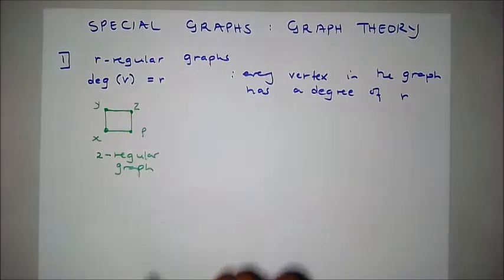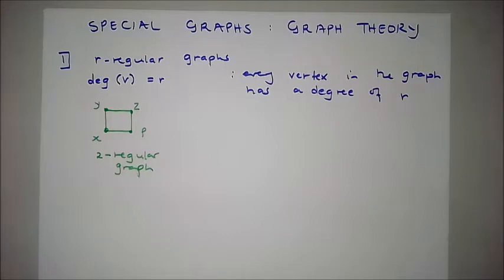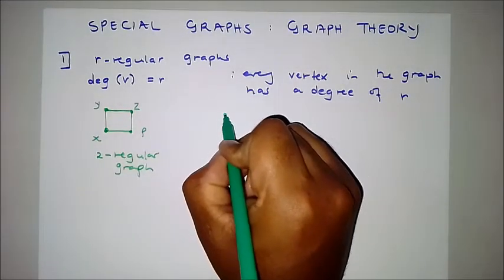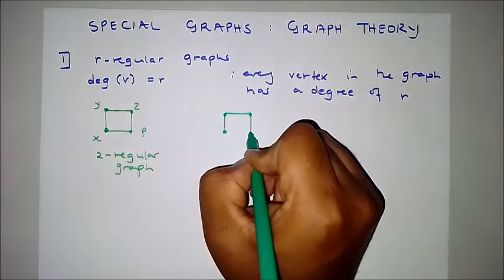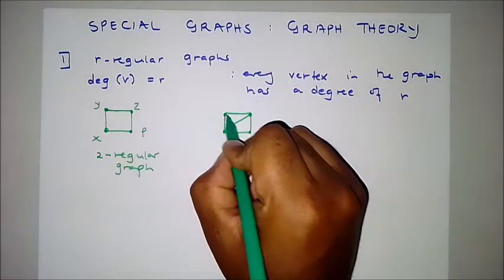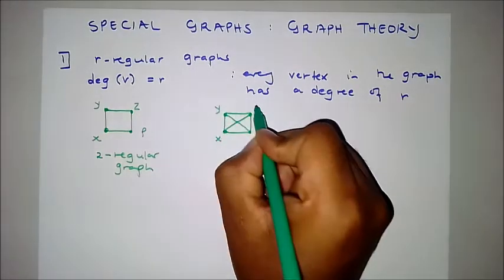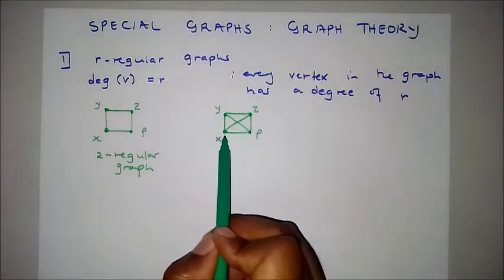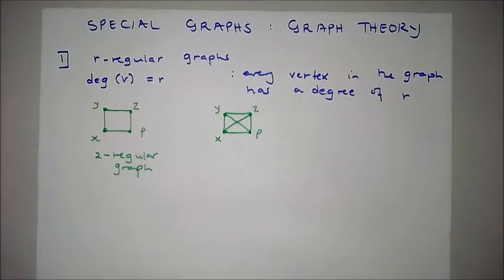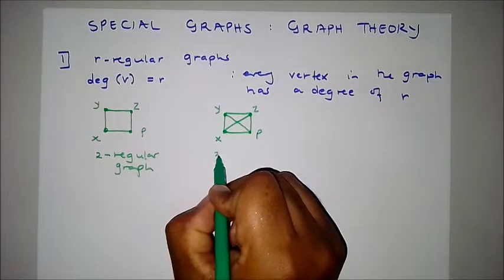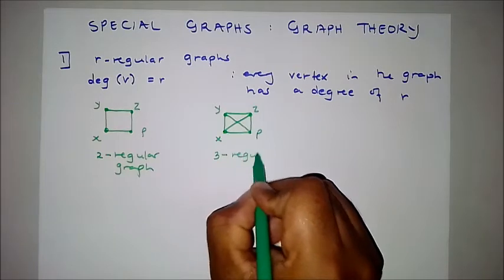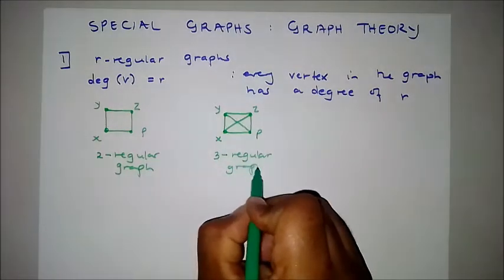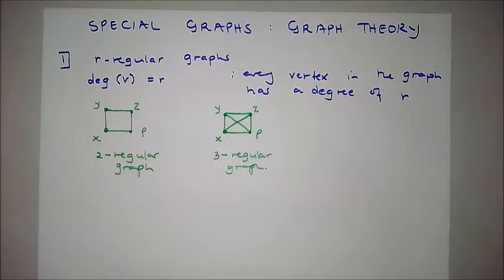So if in a test they say a two-regular graph, just know that all the vertices of that graph have a degree of two. Then we've got another graph with vertices x, y, z, and p where all vertices have a degree of three, so this is called a three-regular graph.